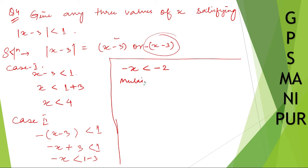Multiplying by negative sign to both sides, it becomes x > 2. According to case 1, x < 4, and according to case 2, x > 2. So we can write x > 2 and x < 4.